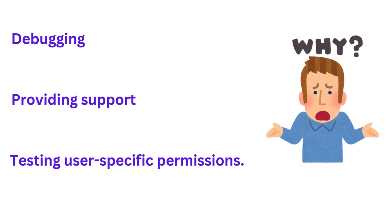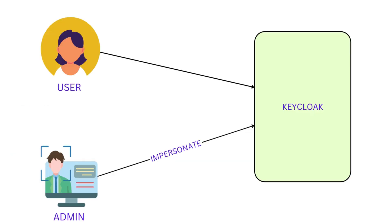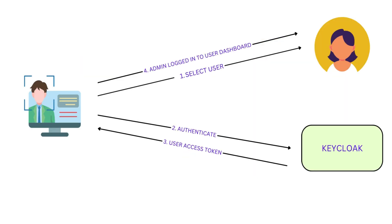As shown in the diagram, the user connects to Keycloak and the admin also connects to Keycloak, with the admin impersonating the user. The flow is: first, the admin selects the user facing the problem; second, the admin authenticates with Keycloak; third, the admin gets the user access token; and fourth, the admin logs in as that user to the user dashboard.